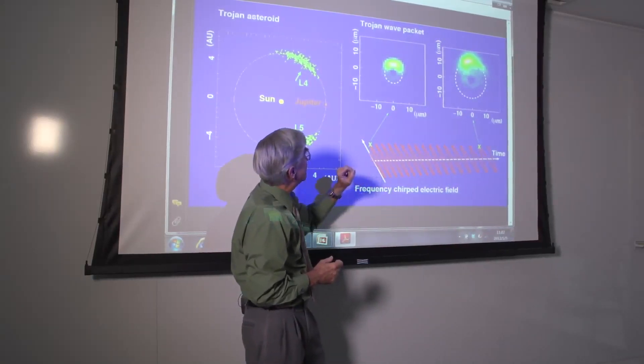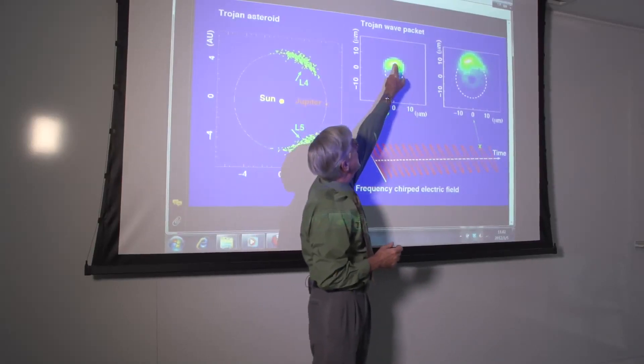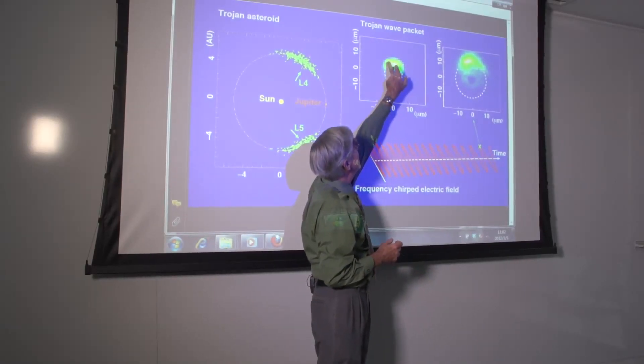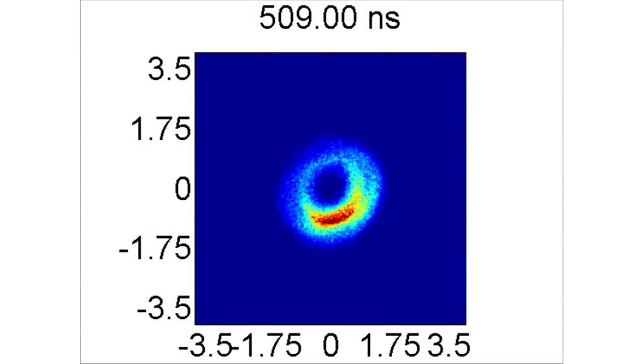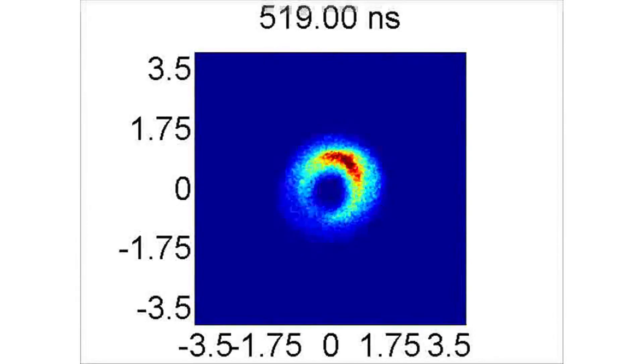Using this electric field, it's possible to create a localized electronic state that remains localized as it moves in a near circular orbit about the nucleus, much as do the Trojan asteroids around the Sun.